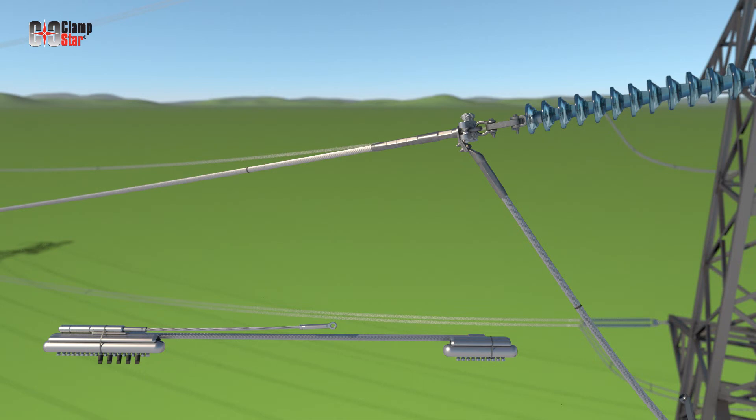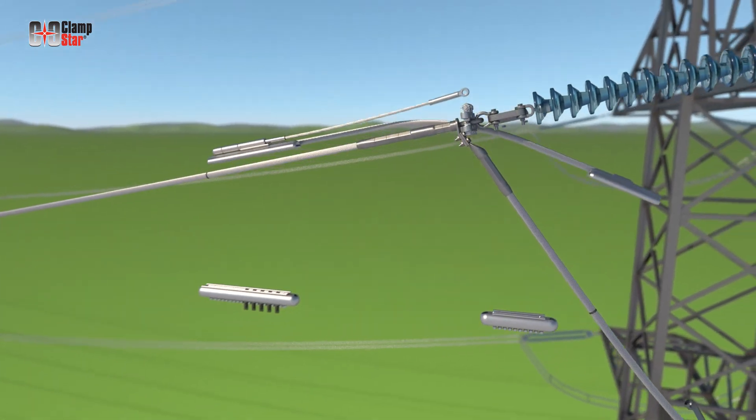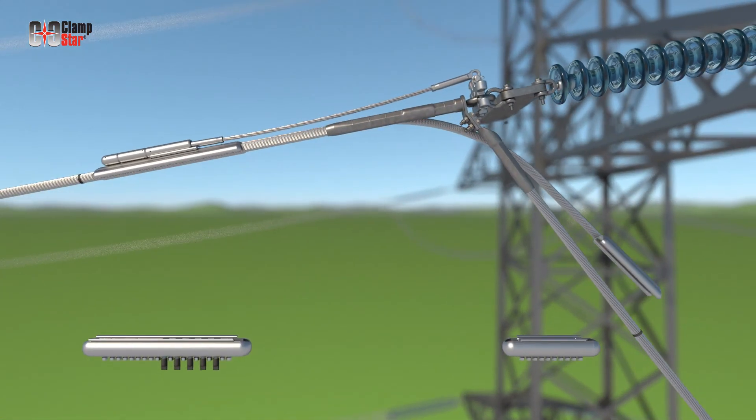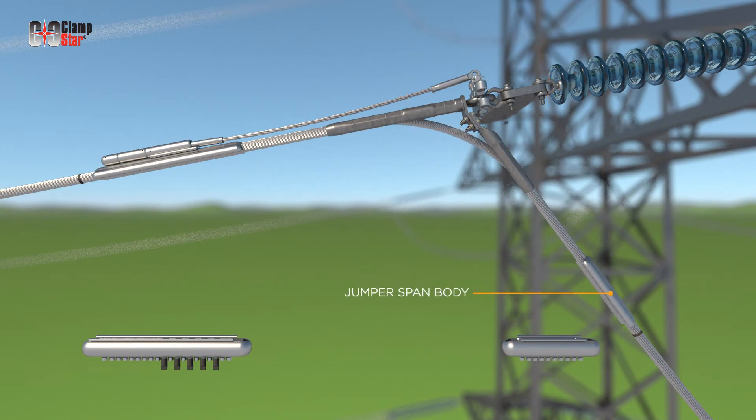It's now time to attach the ClampStar tension span body onto the conductor. This is the end to which the tether is attached. Remove the zip tie that's holding the tension span head to the tension span body and slide the head out of the body. Do the same thing on the jumper side. Place the tension span body in an approximate location on the tension span conductor that will allow the tether to connect to the bracket. At the same time, place the jumper span body in its approximate location on the jumper loop conductor.